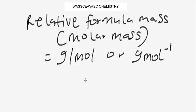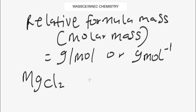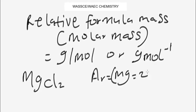Let's look at how to calculate the molar mass or relative formula mass of a compound. We are given magnesium chloride and have to find its relative formula mass or molar mass. In the question you are often given the relative atomic mass of the elements that make up the compound. Here, the relative atomic mass of magnesium is 24 and that of chlorine is 35.5.